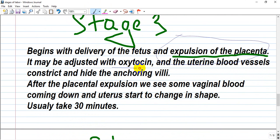Stage 3 is expulsion of the placenta, facilitated by oxytocin or delivered naturally, helping uterine blood vessels constrict. After placenta expulsion, we see vaginal bleeding and the uterus changes shape. Doctors can apply massage on the uterus and cold packs. Usually takes 30 minutes.